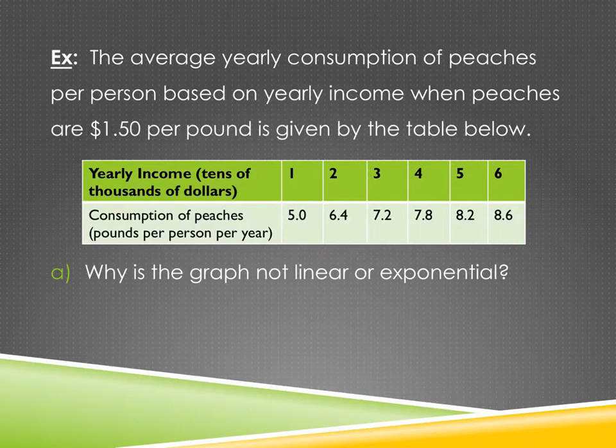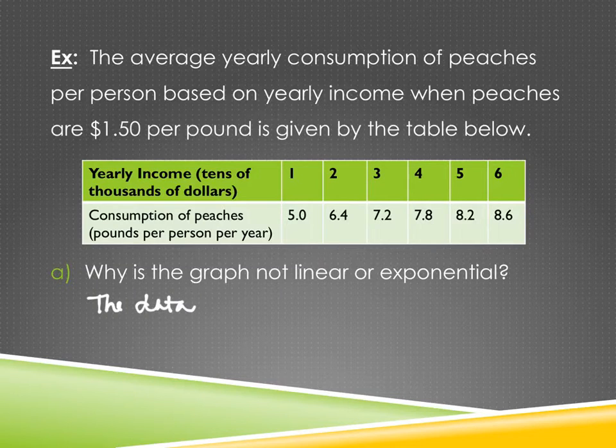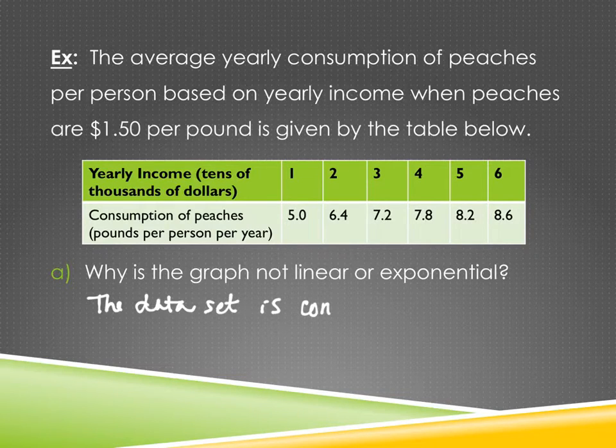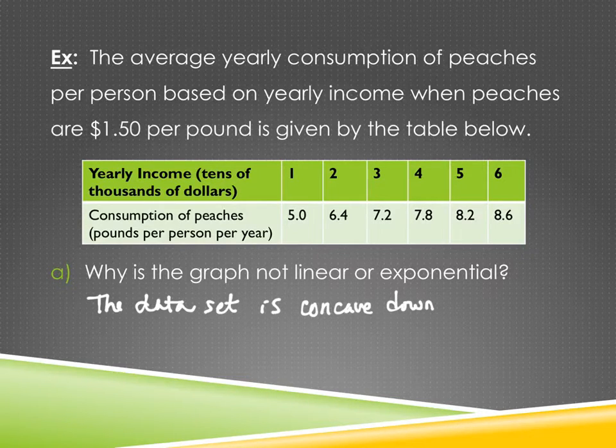And one of the two options for logarithmic graphs is that it can be concave down. So as we're looking at this, the reason on part A is because it's concave down. So the data set, the points, the scatter plot, whatever phrasing you want, but the data set is concave down. There we go. The data says concave down.